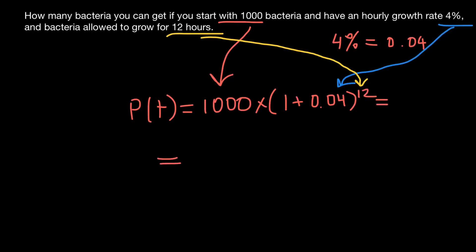And our final answer is going to be, after 12 cycles, after 12 hours, we are going to have 1,601 bacteria.